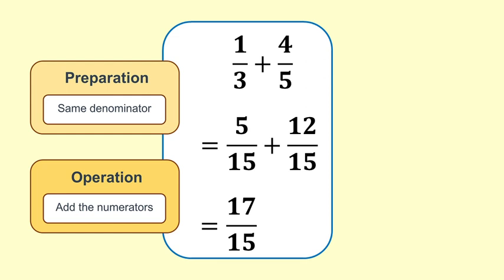Now we can add: 5 fifteenths plus 12 fifteenths equals 17 fifteenths. We will leave the answer in this raw form for now.